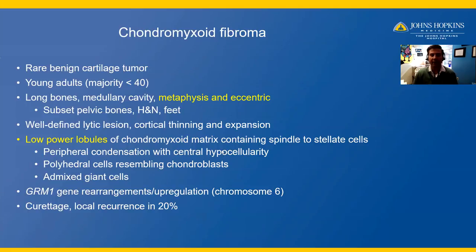Remember to stay at low power for this tumor. There is often an admixture of giant cells in addition to the bland spindle cells. Molecularly, it has been identified to have a GRM1 gene rearrangement with downstream upregulation on chromosome 6.